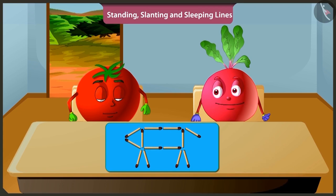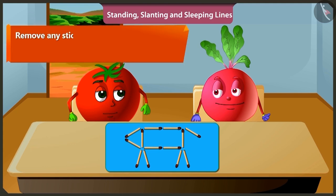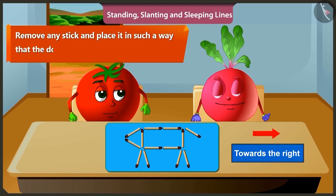But where is the game? Wait, I'll tell you. Which direction do you think the dog is going? It is going towards the left. Now you have to remove any stick and place it in such a way that the dog appears going towards the right.